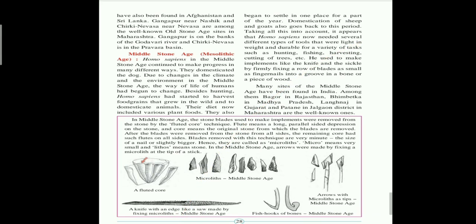Moving on, we will learn about the middle stone age, also known as the Mesolithic age — 'meso' means middle and 'lithos' means stone. In the middle stone age, due to change in the climate and the environment, the way of life of humans had begun to change. Beside hunting, Homo sapiens had started to harvest food grains and domesticate animals, and their diet now included various plant foods. They made different tools for hunting, fishing, harvesting, and cutting trees. These tools were light, durable, proportionate, and symmetrical.